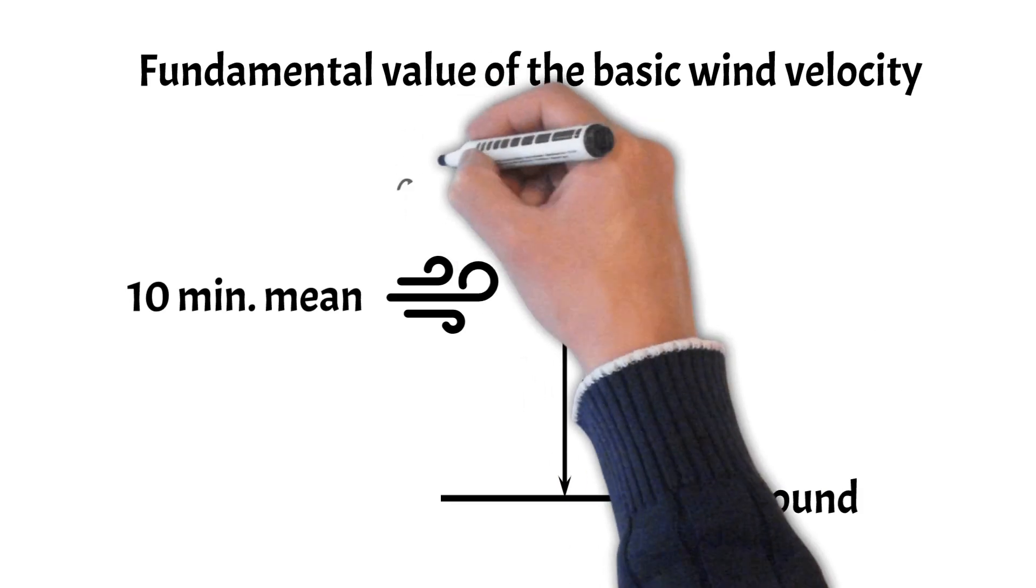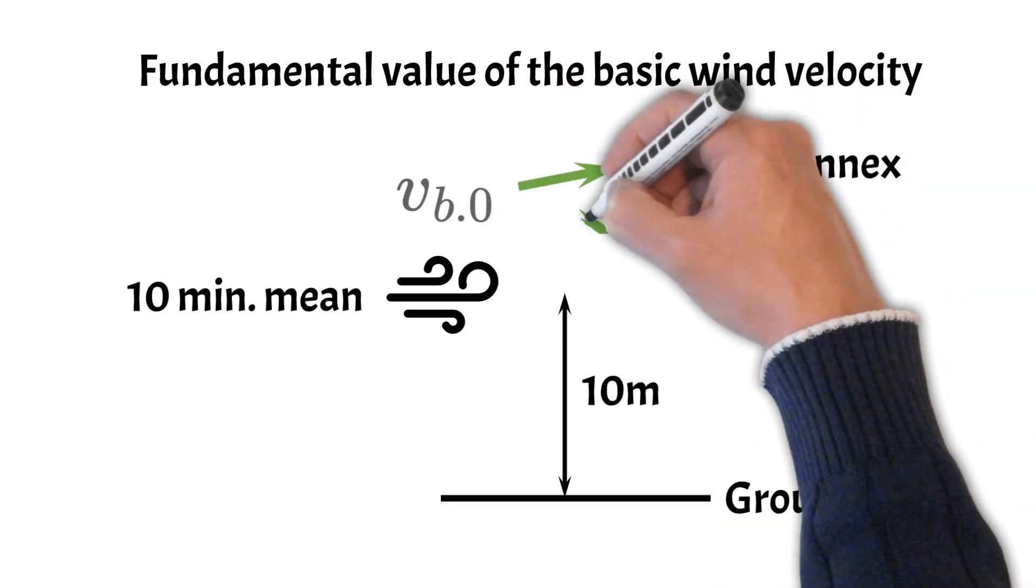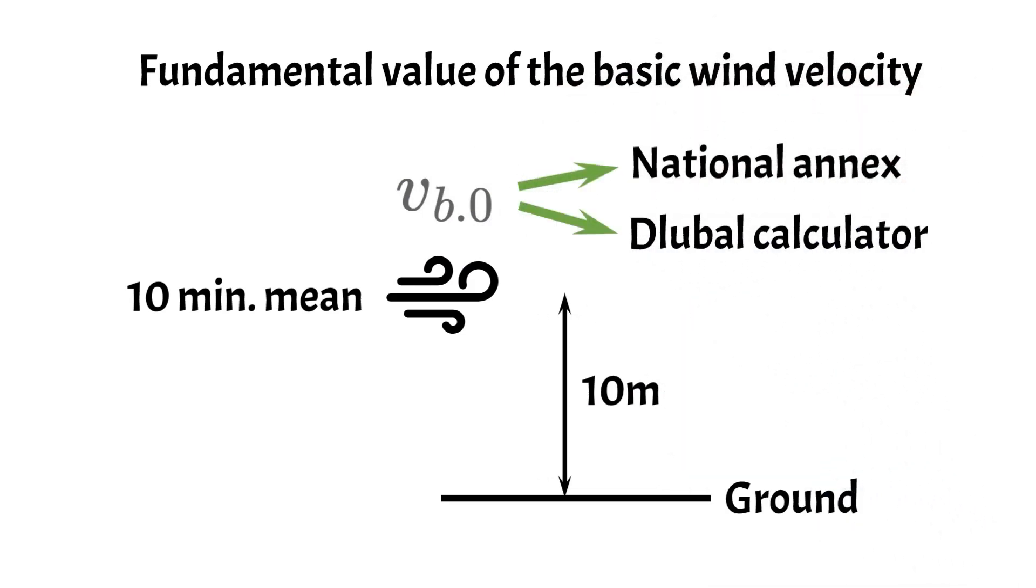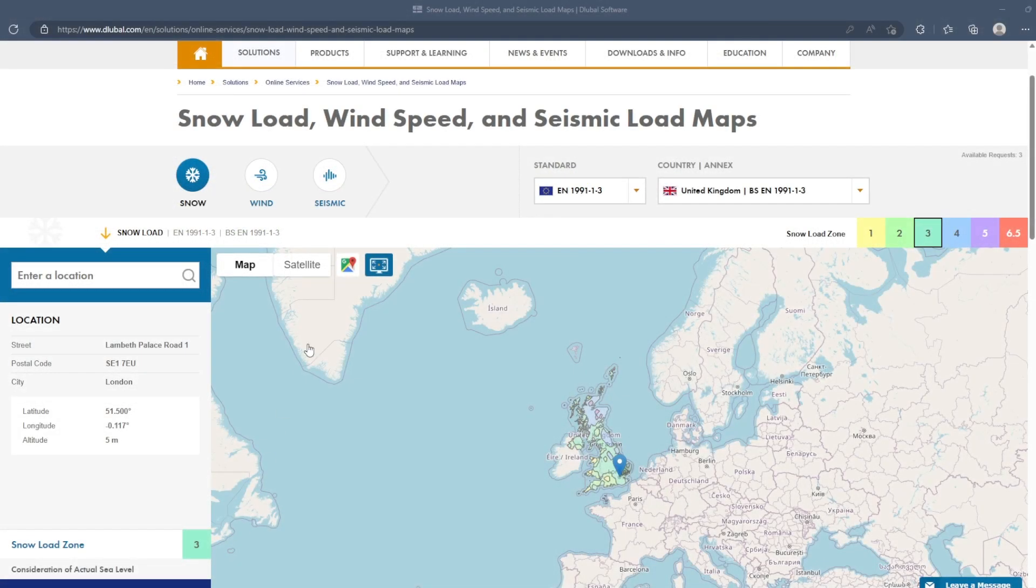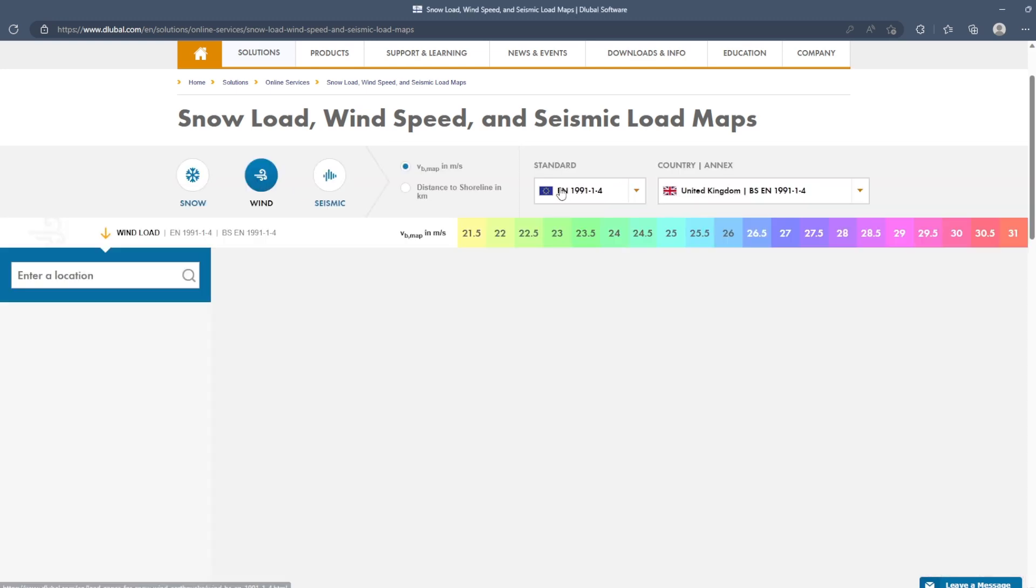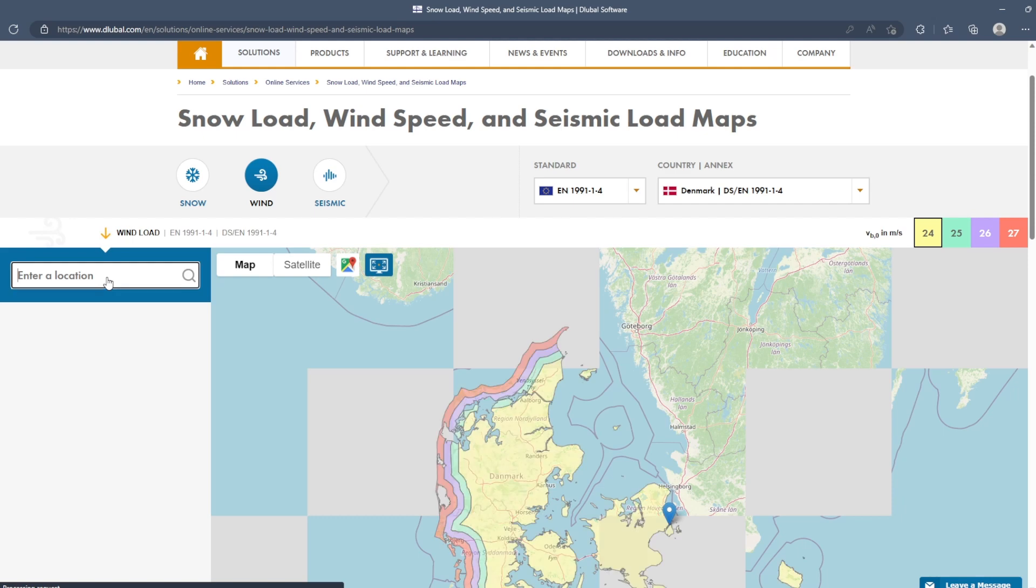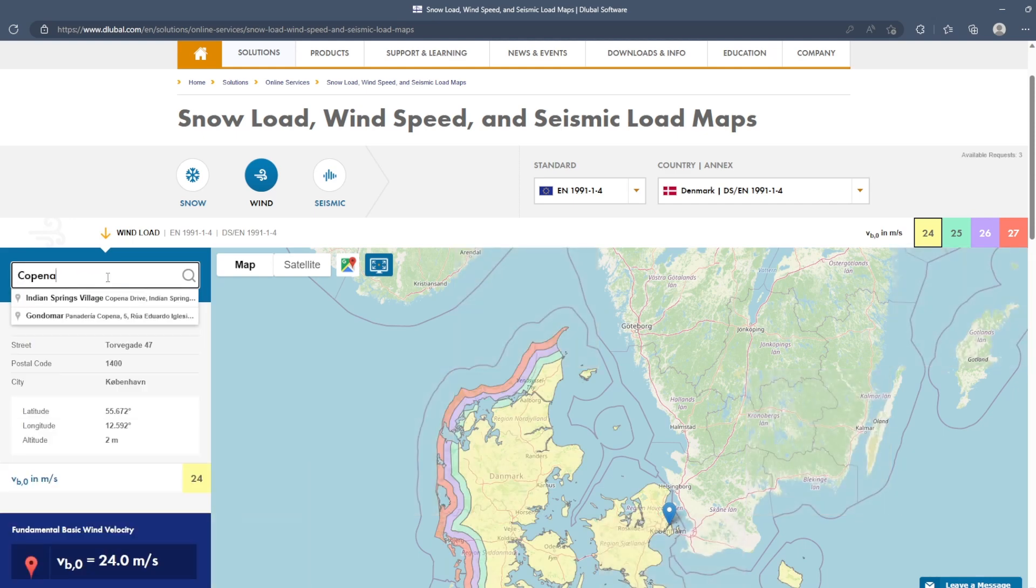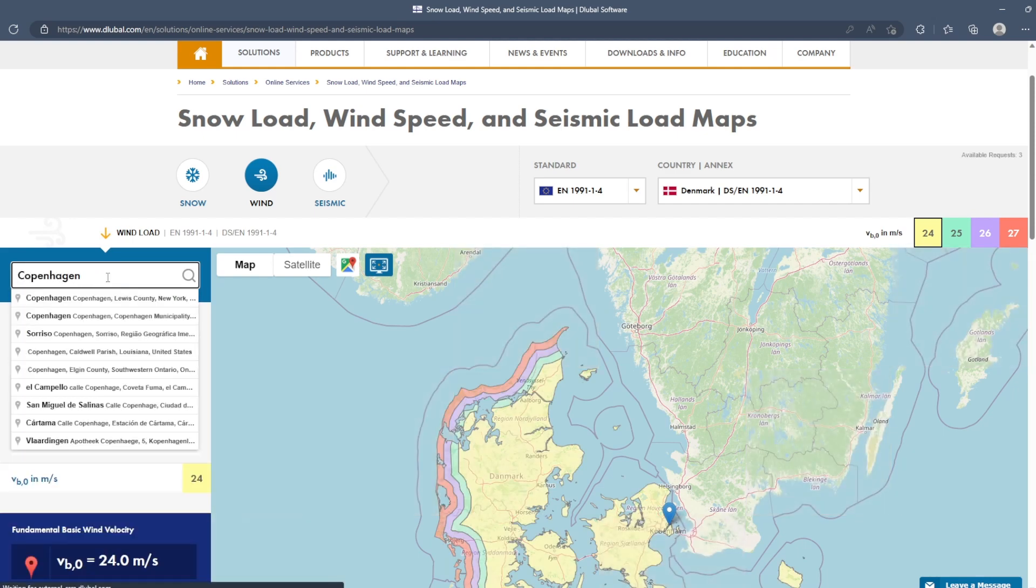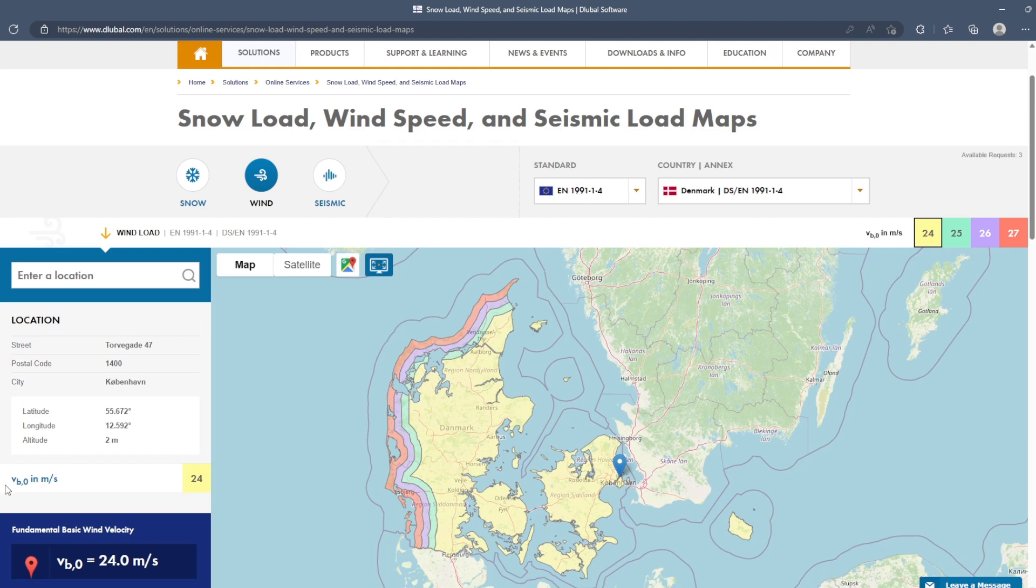This value must be found in the National Annex or you can use the wind speed calculator made by Dlubal Software. To do it with the online calculator simply click on the link in the video description, click on the wind button, select your National Annex and enter your location. If you do that for an office building located in Copenhagen, Denmark, then we get a value of 24 meters per second.